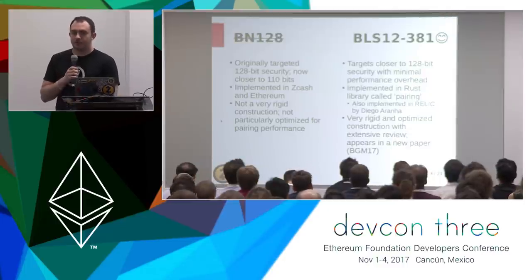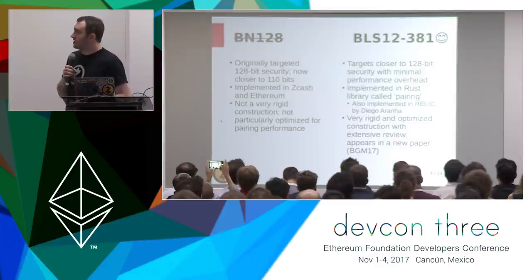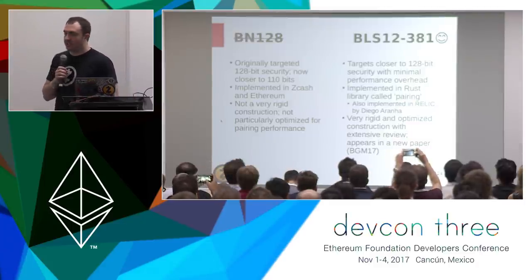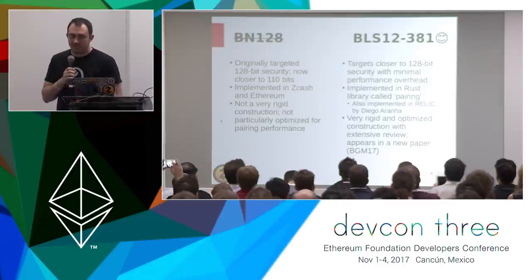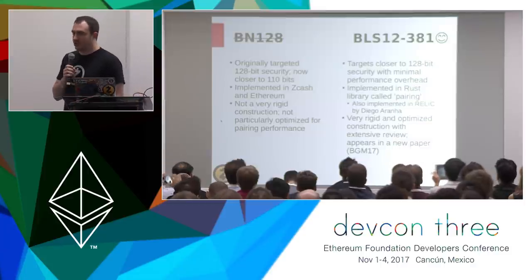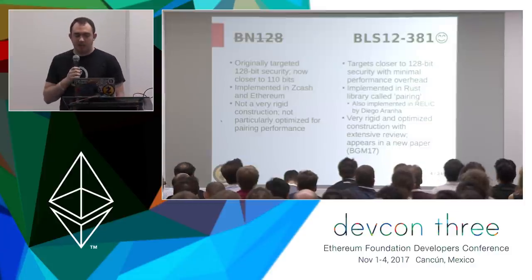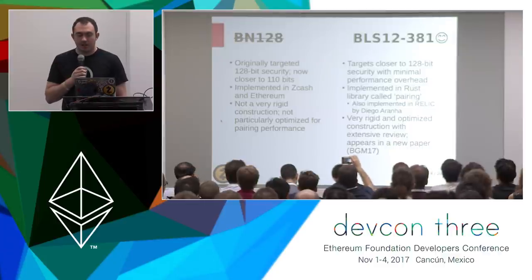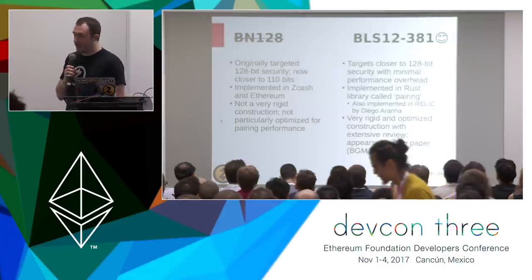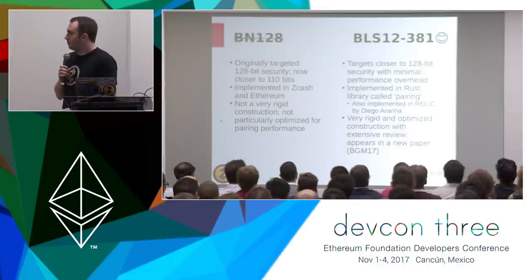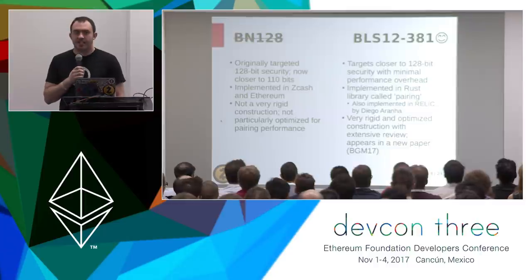So we're designing a new curve targeting closer to 128-bit security, and we're going to move to this in the next version of Zcash. It's designed to hit that security level without losing too much performance. This new curve is very rigid compared to the old curve — it's been reviewed a lot, optimized a lot, and implemented twice. I implemented it in Rust in a library called Pairing, and Diego Arana has also implemented it in Relic. Being a pairing-friendly curve is what we build ZK-SNARKs on top of.